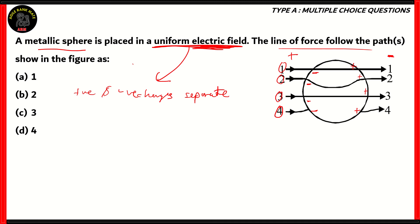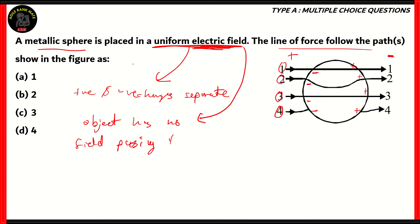The positive and negative charges separate. In an electric field, the object has no field passing through it — that means the electric field lines do not pass through the object. Therefore, options one and three are incorrect because they show the field passing through the sphere. The field lines stop at the surface of the object and then continue from the other side.